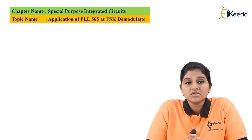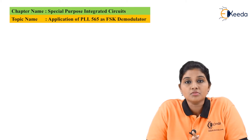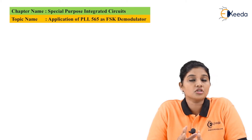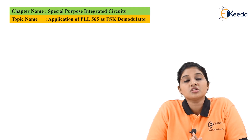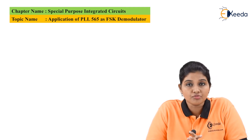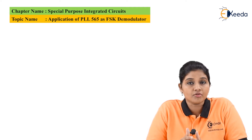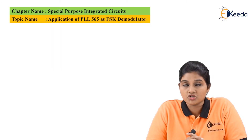PLL is basically a closed loop system. In this system, it locks the output frequency and phase to the input frequency and phase. PLL can be used in a number of applications, like it is used for demodulation purpose, it is used for modulation of AM and FM signals, and many more. One of the applications of PLL IC565 is nothing but FSK demodulation.